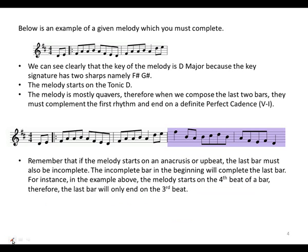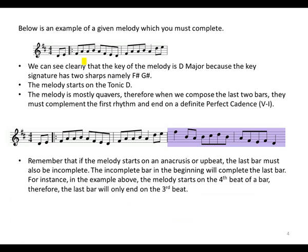Another example for melody writing. We can clearly see that the key of the melody is D major because the key signature has two sharps, namely F and C. The melody starts on the tonic D, and the melody is mostly quavers. Therefore, when we compose the last two bars, they must complement the first rhythm and end on a definite perfect cadence — from dominant to tonic, or from five to one.